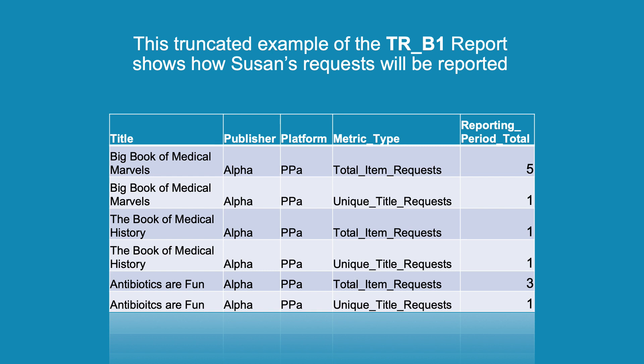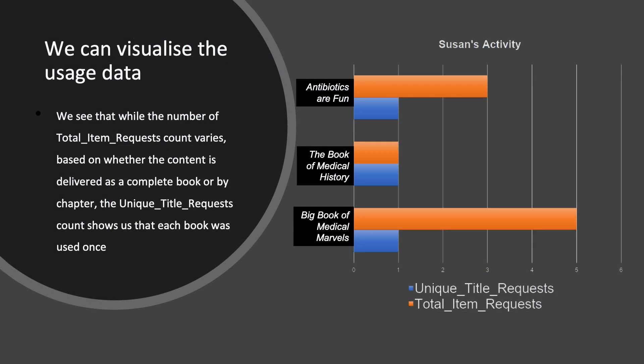The Book of Medical History shows Total Item Requests as one and Unique Title Requests as one because the book is delivered as a single PDF. We can see that while the number of Total Item Requests count varies based on whether the content is delivered as a complete book or by chapter, the Unique Title Requests count shows us that each book was used once.